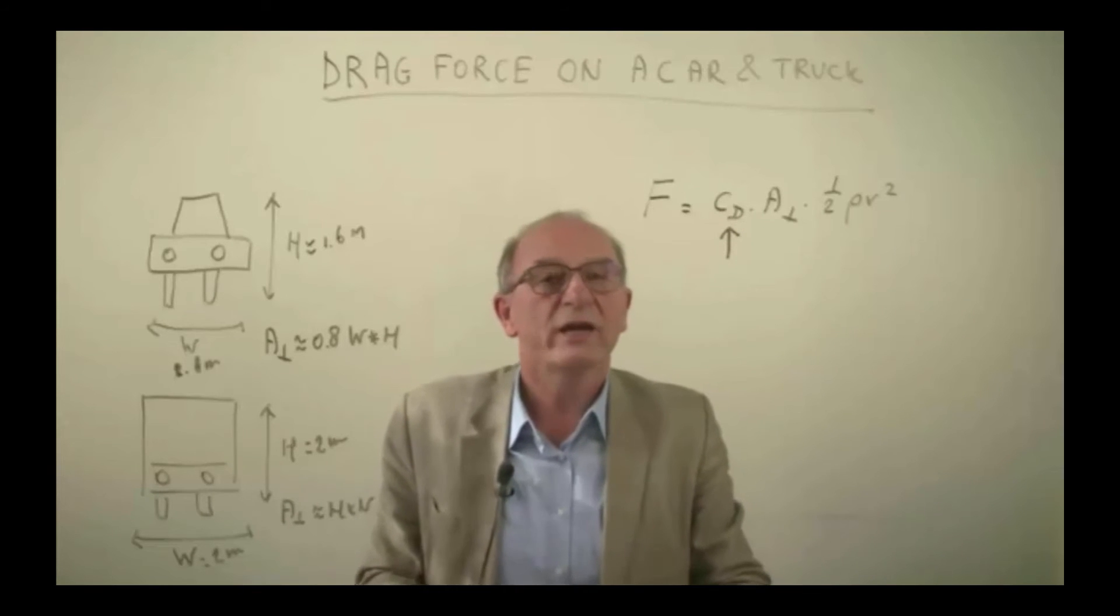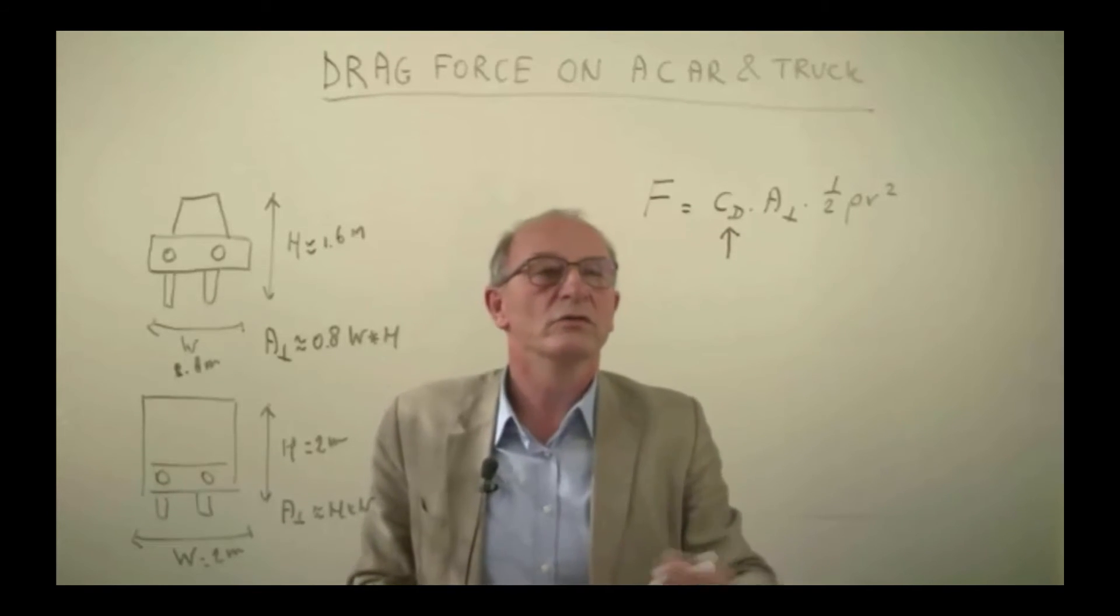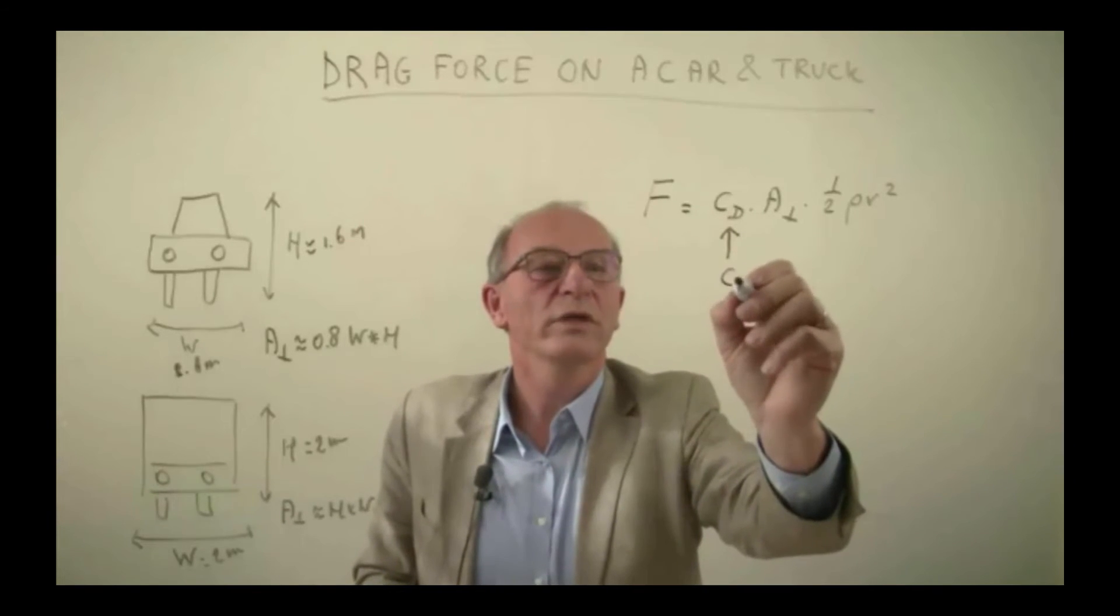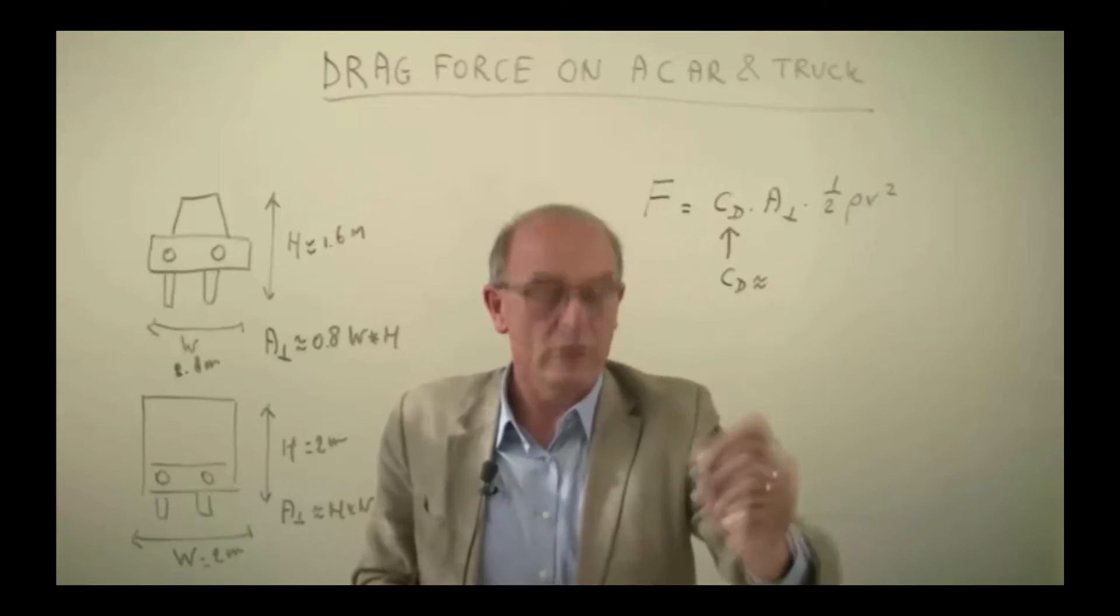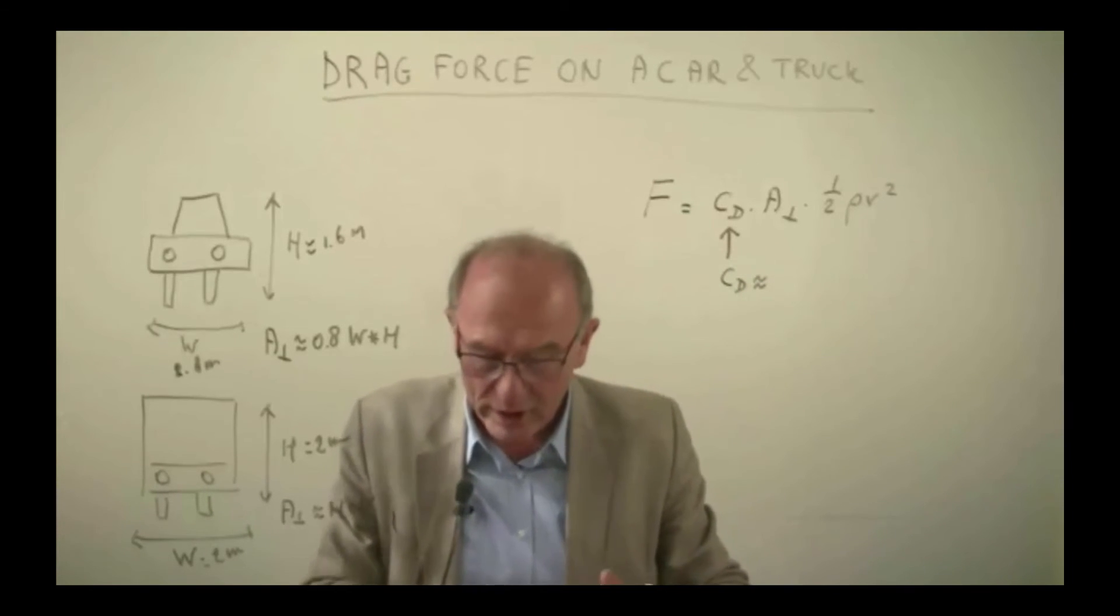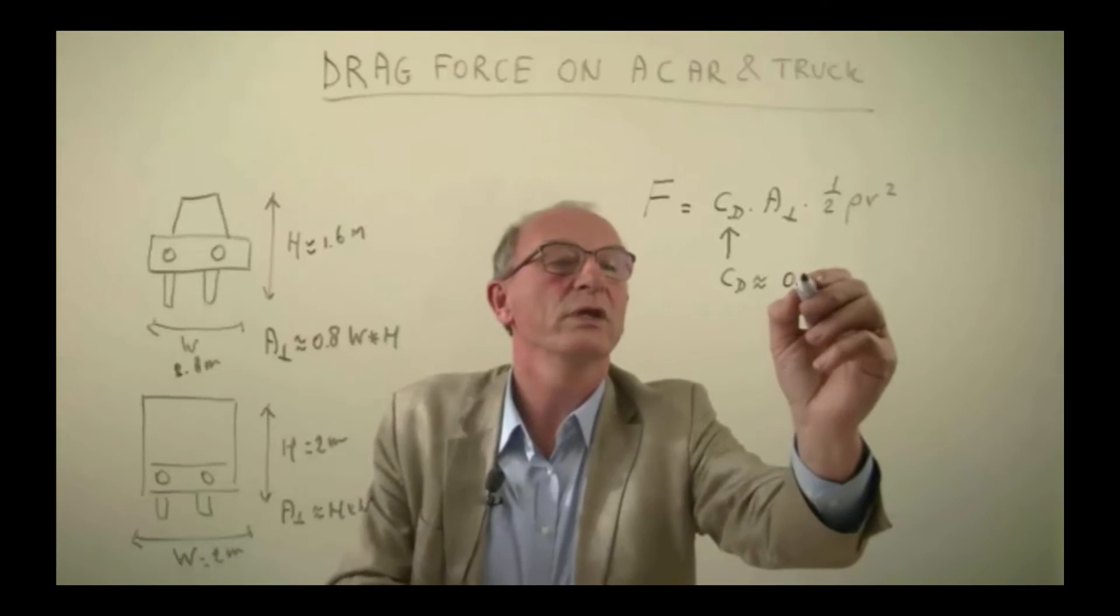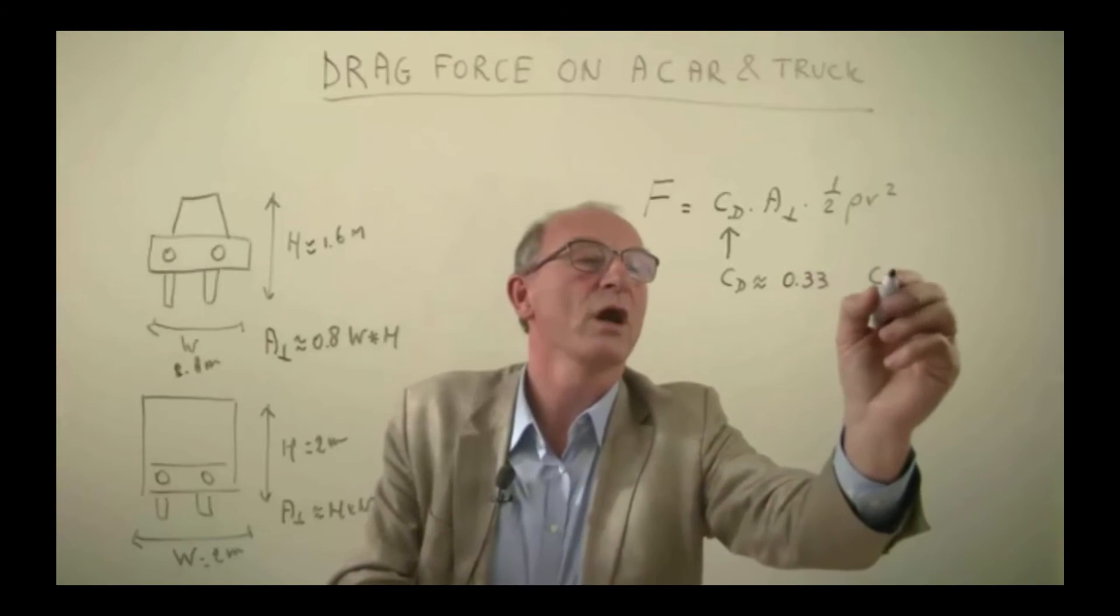The CD factors are determined in wind tunnels. So for a car we know that CD is around, I have to look first here on my paper, is about 0.33. This is for a car.